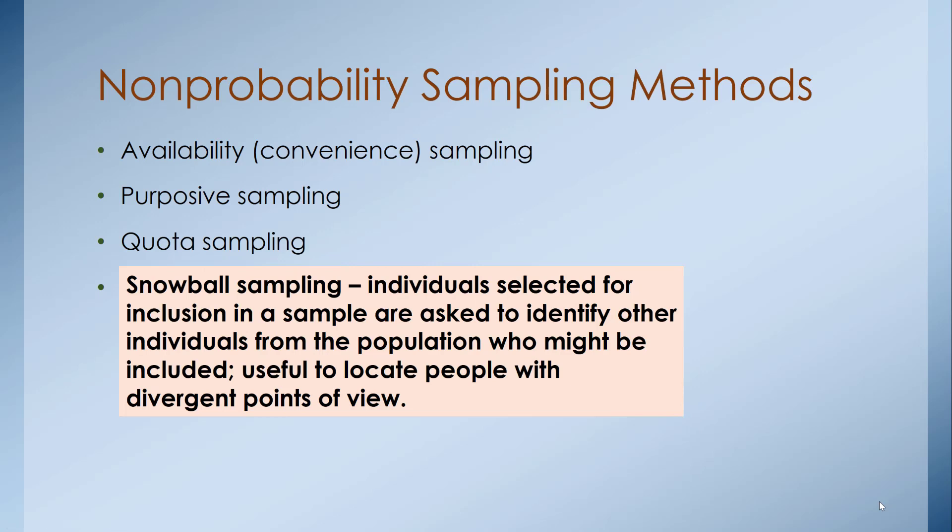Snowball sampling is when you identify individuals with very specific characteristics and ask them to identify other individuals with similar characteristics. This is useful for locating individuals from very divergent populations that are difficult to identify or hard to gain access to. Those individuals who share characteristics can connect you with others willing to participate. Snowball sampling is very common in qualitative research, as are availability, purposive, and quota sampling.